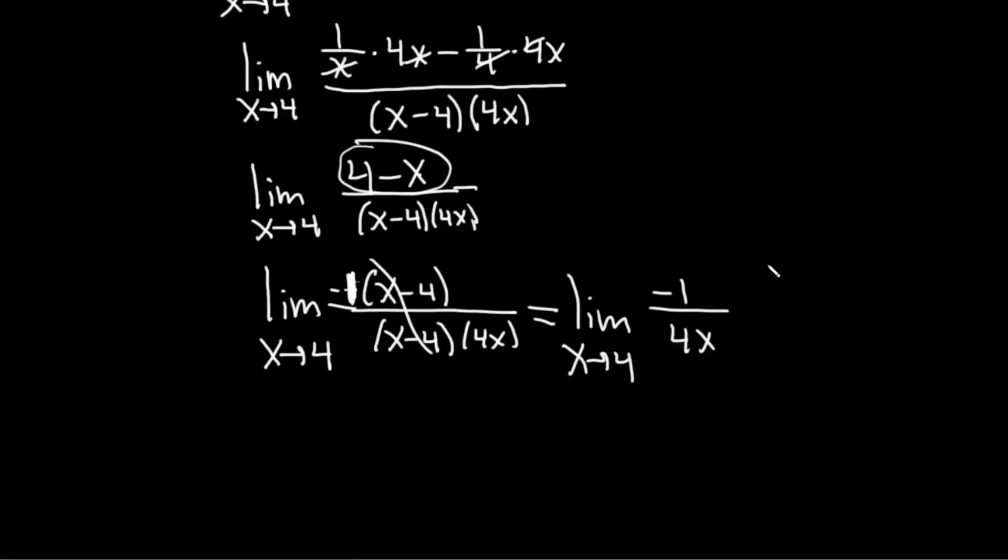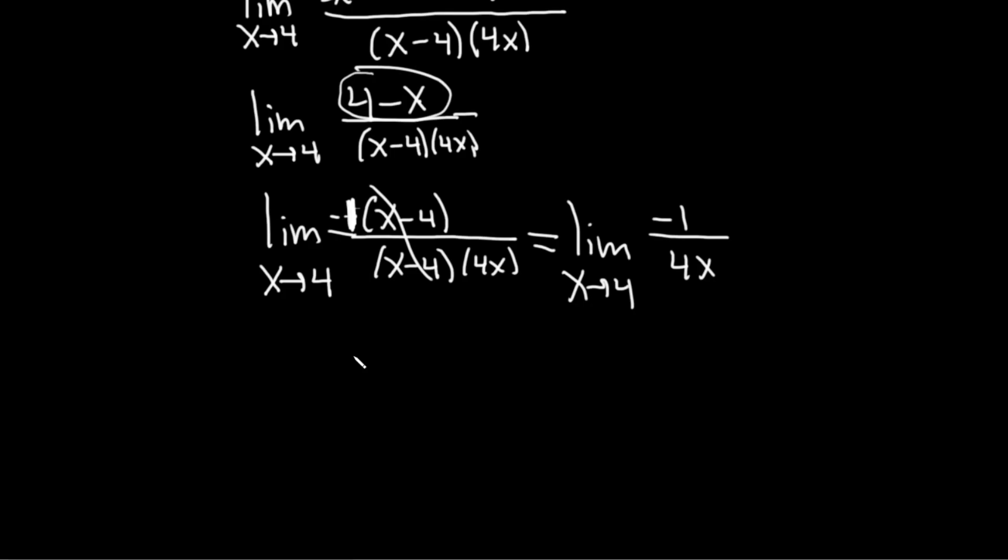Oh we've finally reached a point where we can plug in the number. We can rejoice. And remember when you take this number and you plug it in that's when you drop the limit sign. So this is negative 1 over, and this is 4 times 4. So this is negative 1 over 16. And that would be the final answer. Kind of a nice problem. I hope this video has been helpful. Good luck.